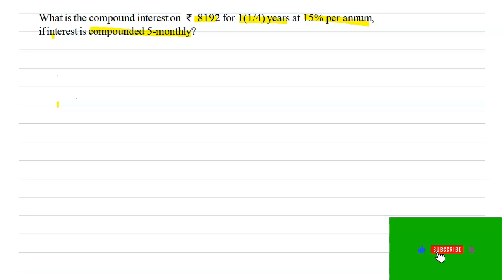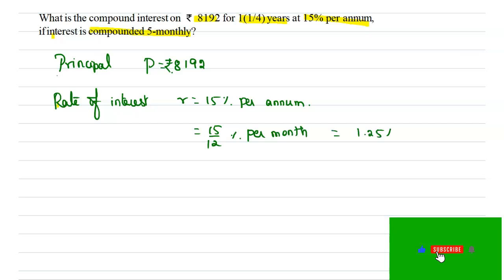The principal amount is Rs. 8192 and the rate of interest is 15% per annum, which means 15/12% per month, which is equal to 1.25% per month. The time period is given as 1 1/4 years. If we are converting per month, then we will get 15 months.